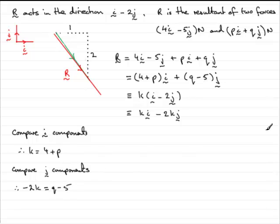So I've got two equations here. Two equations containing p's and q's and k. So what I can do is eliminate the k between these two equations by substituting equation 1 into equation 2. If we do that, we're going to have minus 2 times k. But k is 4 plus p. So 4 plus p. And that equals q minus 5.